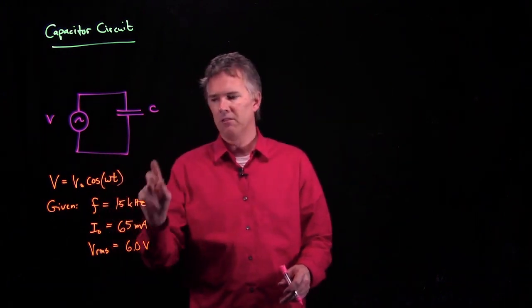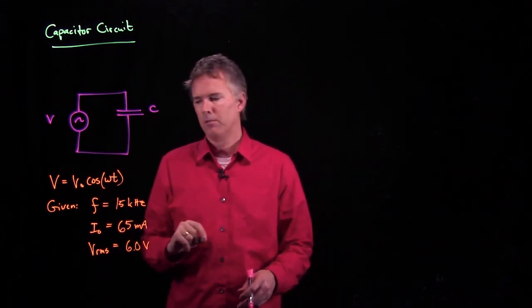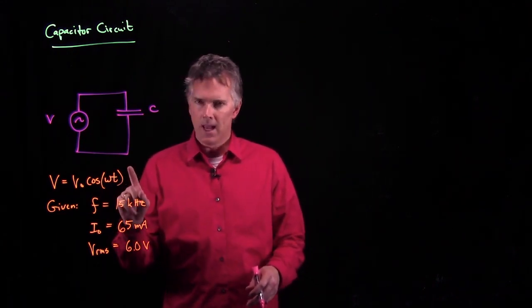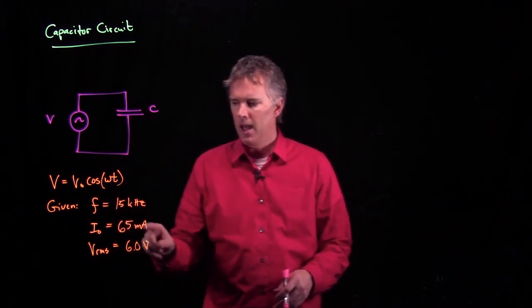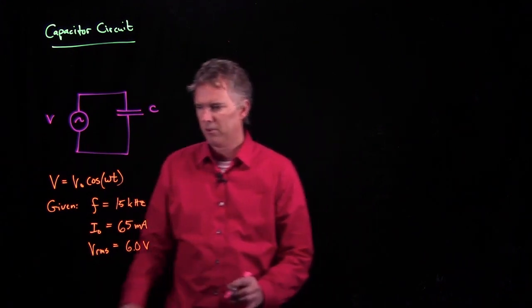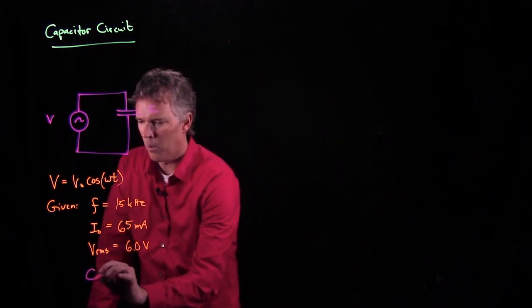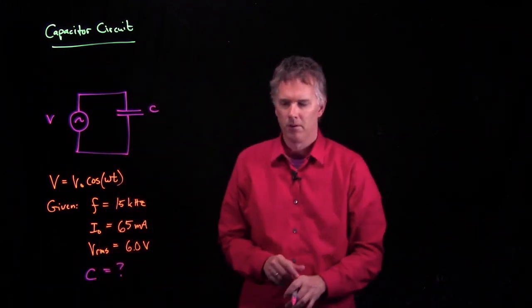Namely, the frequency of this circuit is 15 kilohertz. And at 15 kilohertz, we get the following: we get a peak current of 65 milliamps and an RMS voltage of 6 volts. And the question in this problem is, what is the capacitance? What is the capacitor right there?